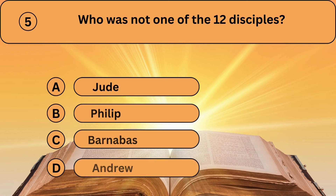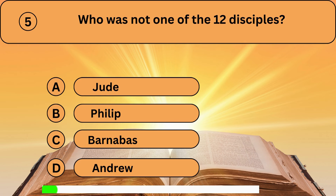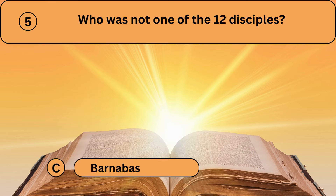Question five. Who was not one of the twelve disciples? A. Jude. B. Philip. C. Barnabas. D. Andrew. Barnabas is the correct answer.